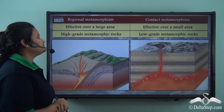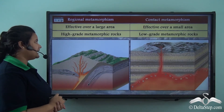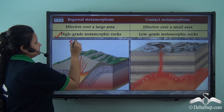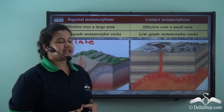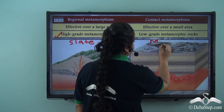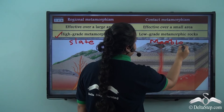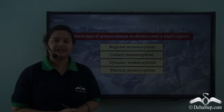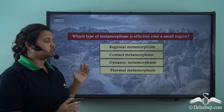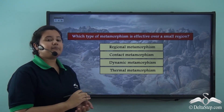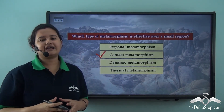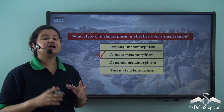Another point of distinction: in regional metamorphism, high-grade metamorphic rocks are formed, for example slate. In contact metamorphism, low-grade metamorphic rocks are formed, for example marble. Quiz question: which type of metamorphism is effective over a small region — regional metamorphism, contact metamorphism, dynamic metamorphism, or thermal metamorphism? The correct answer is contact metamorphism — in contact metamorphism, the metamorphism is effective only over a small region.